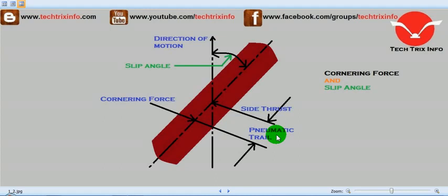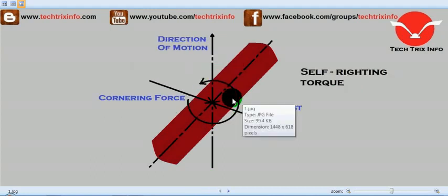That is actually the torque produced on the system. A tendency is always present to bring back the wheel in the direction of motion due to this. Due to this reason, the torque is called a self-righting torque.